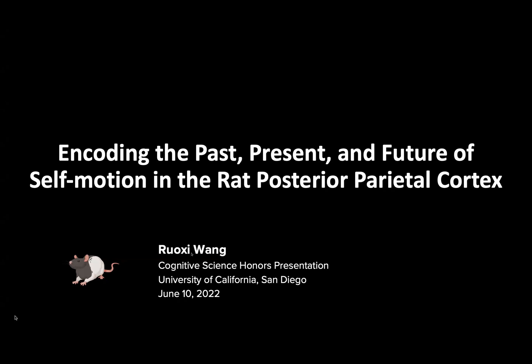Imagine yourself in your home late at night and the power suddenly goes out. You walk out into the hallway, find a path to the storage room, and proceed to light up a candle. How are we able to accomplish that with minimal visual information? The answer is that our brain is capable of taking self-motion, such as personal speed and movement, to tell us where we are in the environment. This is what we call path integration.